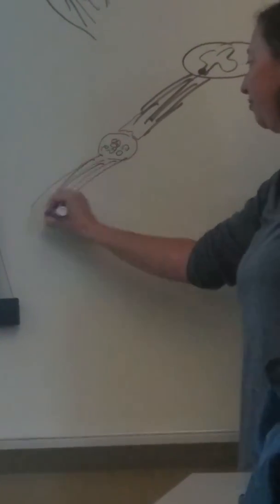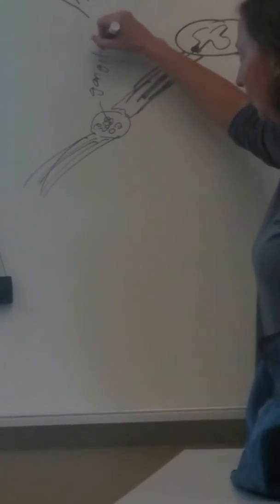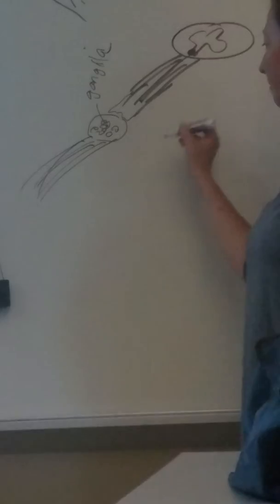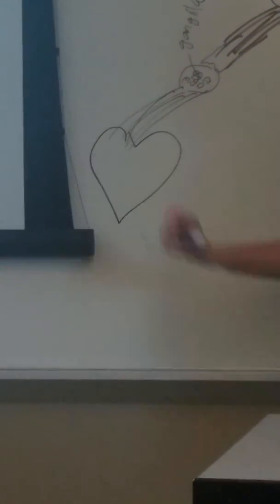Ganglia refers to cell bodies within the peripheral nervous system. So finally we get to the end, and we innervate an internal organ like your heart.